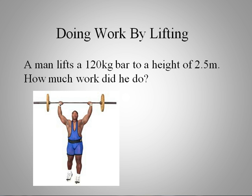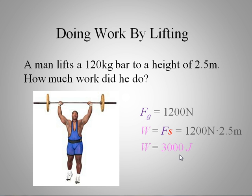I have an example here. You have a weight lifter. He lifts a 120 kilogram bar to a height of 2.5 meters. How much work did he do? If you want to try that and pause your video, do so now. We have the force due to gravity. That's the weight of this bar. We multiply the mass by gravity. If we assume gravity is 10, we get 1,200 newtons. The work is given by the force times the distance moved. The height is 2.5 meters. So we multiply those two, we get 3,000 or 3 kilojoules.